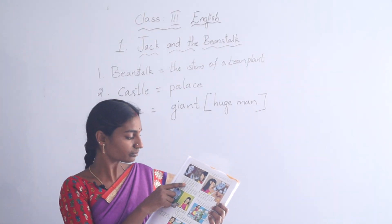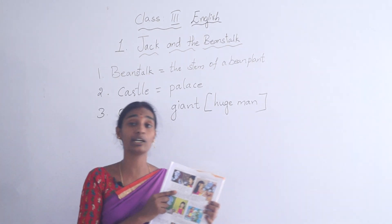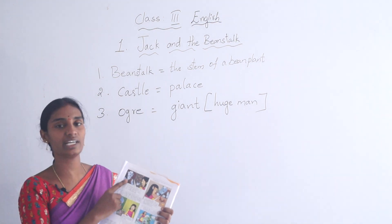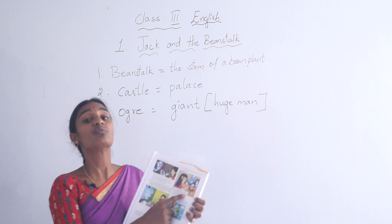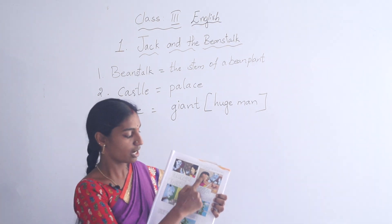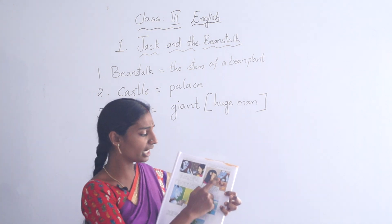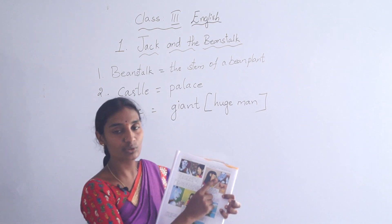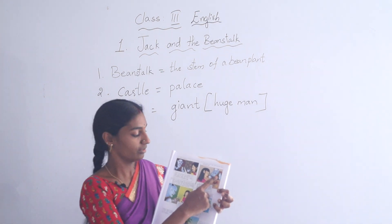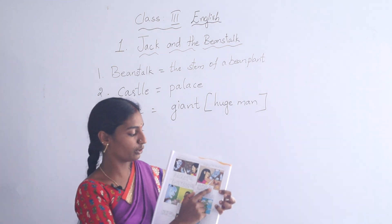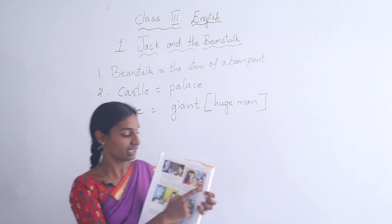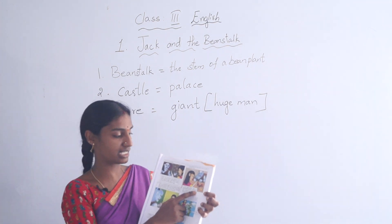The ogre said: 'If you don't give me the hen which lays the golden eggs, I will be very angry.' The ogress listened and went inside and brought the hen which lays the golden eggs. From behind the trunk, Jack was observing everything happening there. The ogre counted all the eggs and went back to sleep.